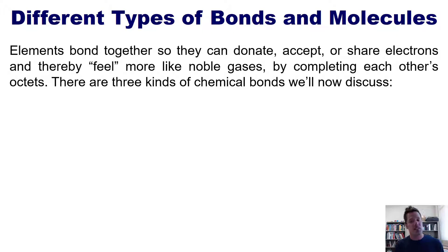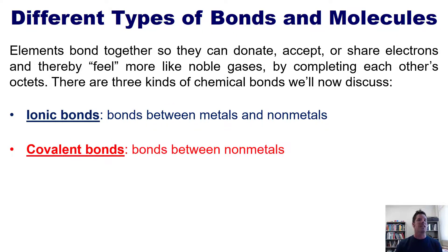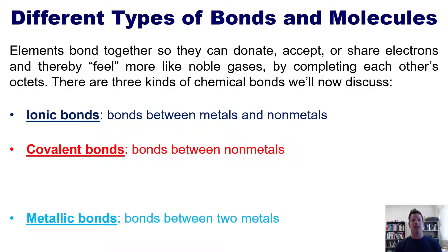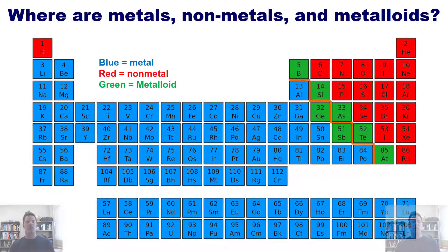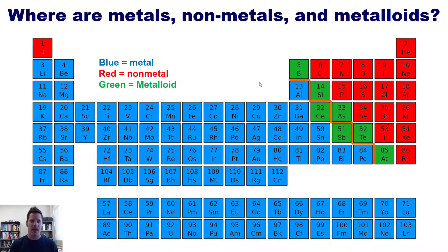There are three different kinds of chemical bonds. Ionic bonds are bonds between metals and non-metals, covalent bonds are bonds between non-metals, and metallic bonds are bonds between two or more metals. Here is the periodic table colorized to show which elements are metals, non-metals, and metalloids, which have properties of both categories. The vast majority of elements are metals.